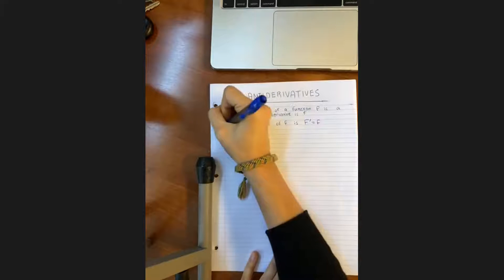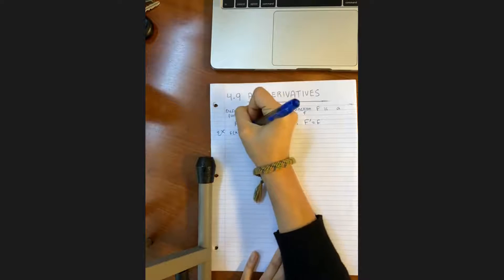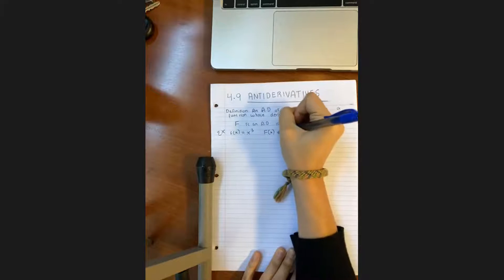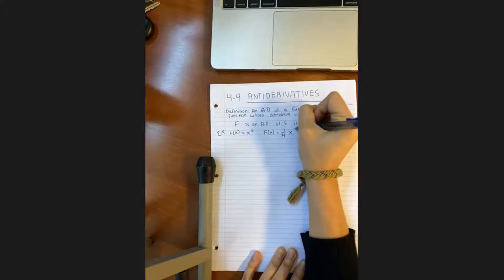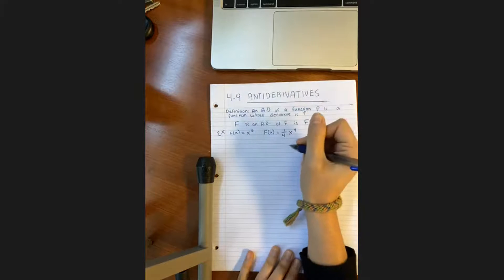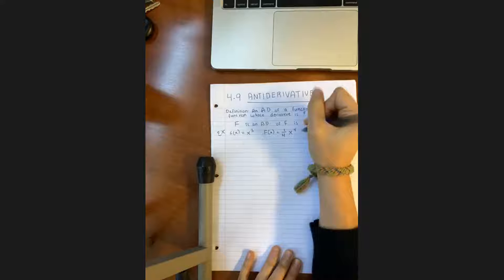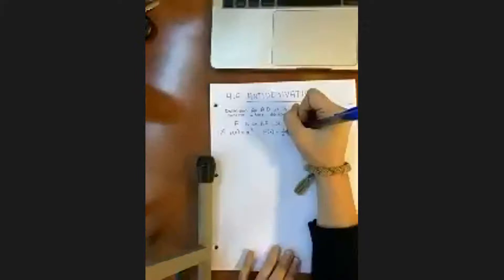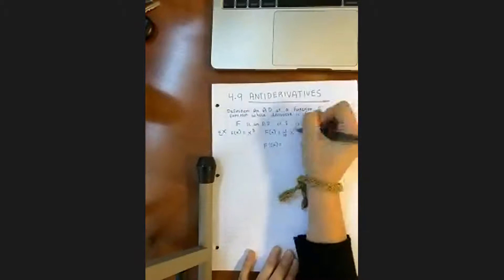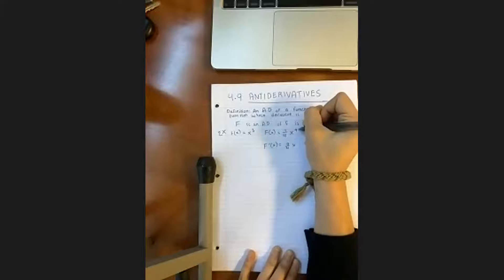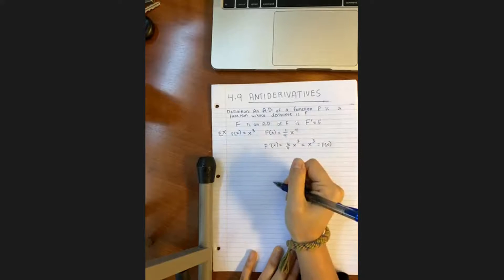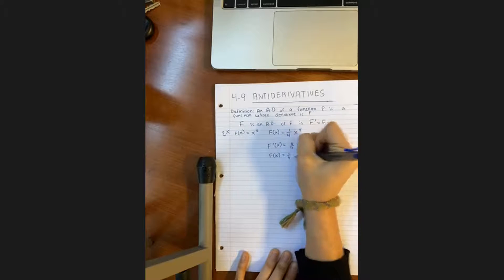For example, if we have f of x is equal to x cubed, then we need to find what capital F of x is. In this case, capital F of x is equal to one-fourth times x to the fourth power. This is because to reverse this with the power rule, we subtract one from the exponent and bring it down. So if we find the derivative of capital F of x — F prime of x — we bring down four: four over four times x to the four minus one equals x cubed, which is equal to f of x. So capital F of x is equal to one-fourth times x to the fourth power.